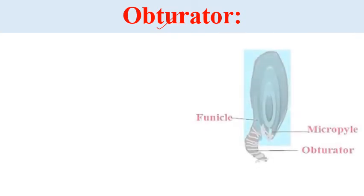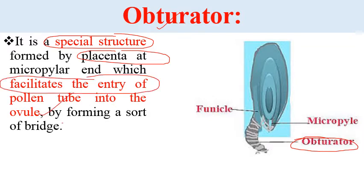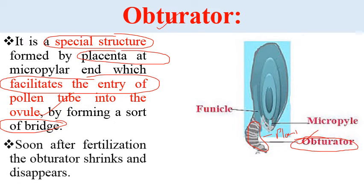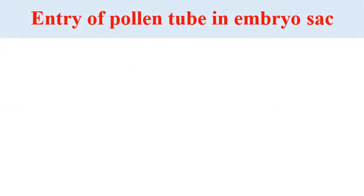The obturator is a special structure found near the placenta at the micropylar end which facilitates the entry of the pollen tube into the ovule by forming a sort of bridge. This bridge-like structure is formed by the placenta and helps in the entry of the pollen tube inside the ovule. Soon after fertilization, this obturator shrinks and disappears.